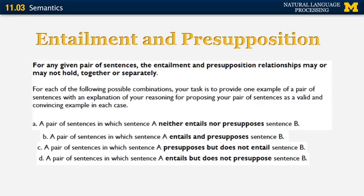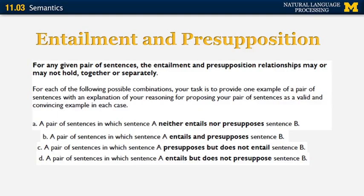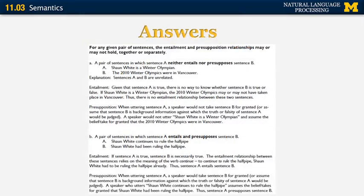Let's think about examples of those sentences, and then you will see the answers. The examples cover each of the four combinations of entailment and presupposition — none of the above, both, and just one or the other — which you can go through and understand why they were selected.